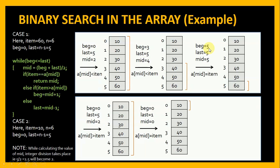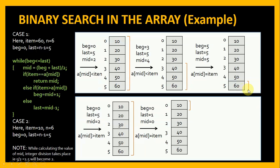Now beginning is 5 and last is 5, so mid becomes 5. a[mid] equals item 60 — the data is found and we return mid. You can see that in the beginning our search covered the entire array, then narrowed to the lower half, then to just one element. Every time we reduce the area of our search. This element is present at the end, and if we performed linear search it would take 6 comparisons, but with binary search only 3 comparisons are needed.